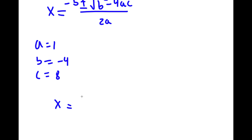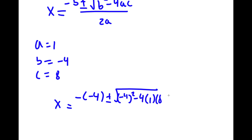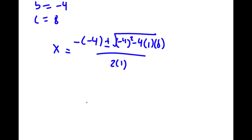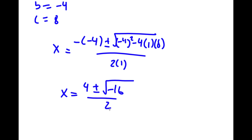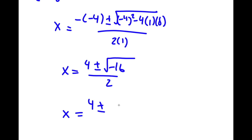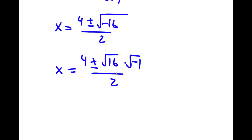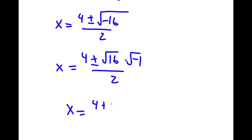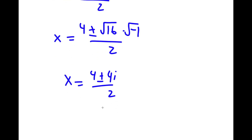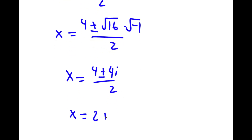So I have x is equal to negative of negative 4 plus or minus the square root of negative 4 squared minus 4 times 1 times 8, all over 2 times 1. This equals 4 plus or minus the square root of 16 minus 32, which is negative 16, all over 2. That's equal to 4 plus or minus the square root of 16 times the square root of negative 1, over 2. The square root of 16 is 4, and the square root of negative 1 is i, so x equals 4 plus or minus 4i over 2, which is equal to 2 plus or minus 2i.